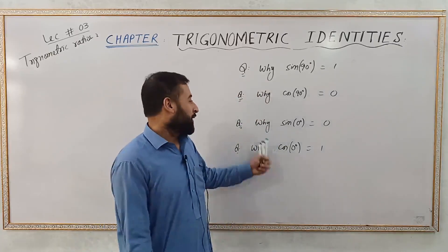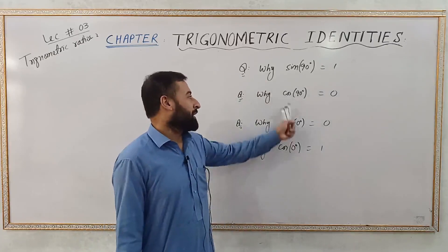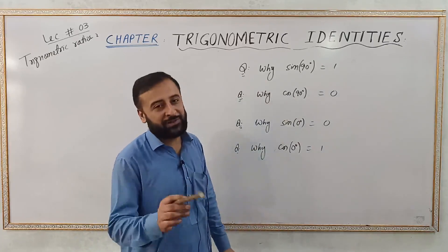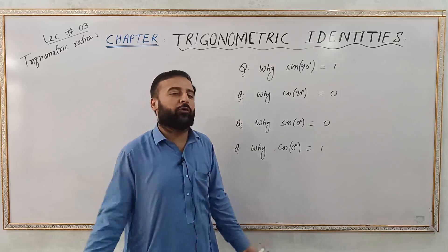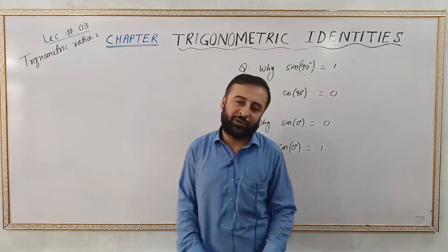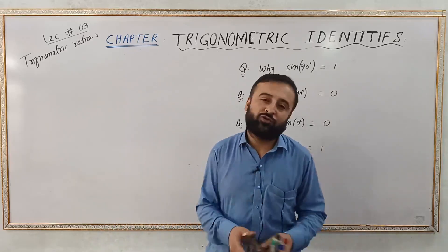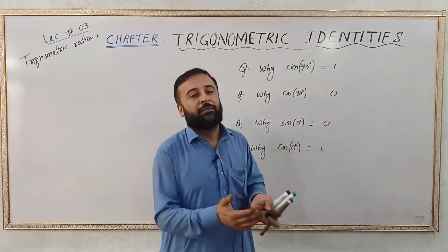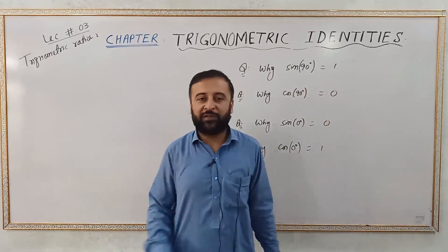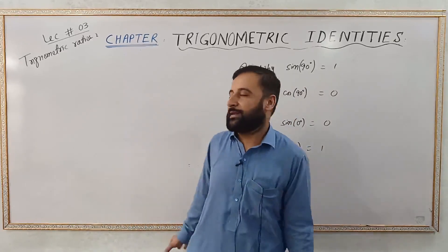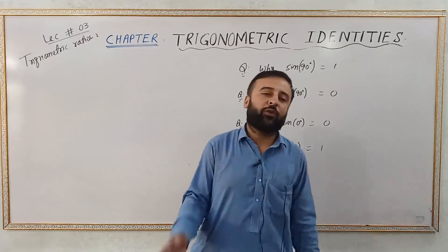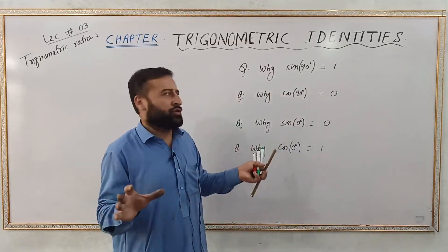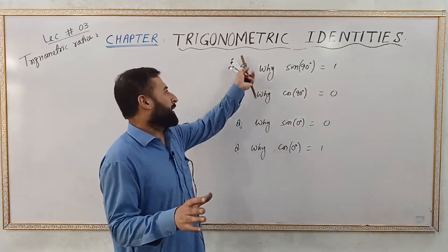Why is sine of 90 equal to 1? Why is cosine of 90 equal to 0? And similarly for 0 degree angle. Trigonometric ratios are very important for engineering students, but medical students also come across these questions because they deal with physics, even if there is no mathematics in their course. So it's very important that you have a good grasp on trigonometric ratios.